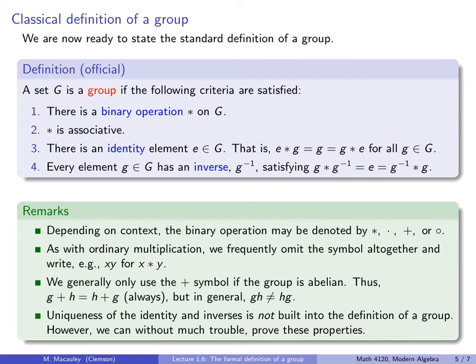uniqueness of the identity and inverses is not built into the definition of a group. However, we can, without much trouble, prove these properties. And that's what we'll do. I think we'll actually prove one of them in class, and the other one will be left for the homework.